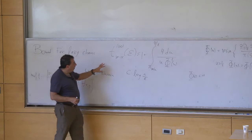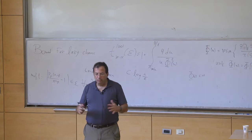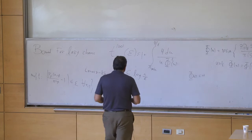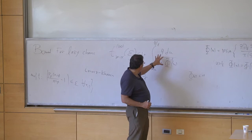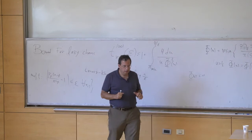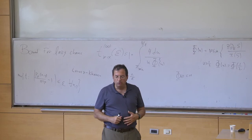In infinite graphs, a bound like this was proved by Varopoulos and Coulhon. The kind of bound is: if the time t is bigger than this integral expression, then the transition probabilities are bounded by epsilon. That's the type of bound you have in infinite graphs.